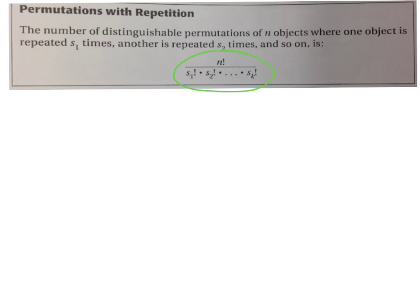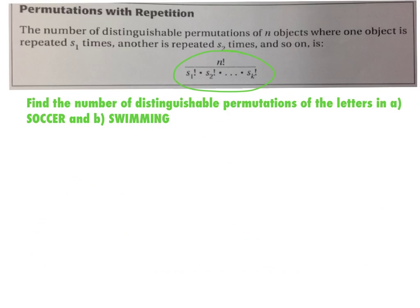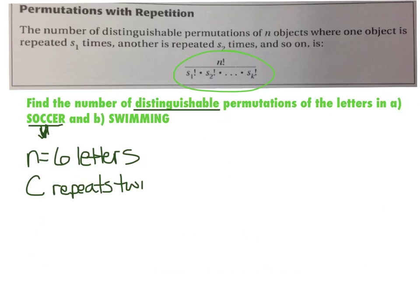All right. So let's do an example problem. Find the number of distinguishable permutations. Distinguishable means different ones that you can tell the difference between, of the letters in soccer and then in swimming. So it's saying how many times, like if I rearrange the letters, for example earlier we did ABC, ACB, and so on. There's a C that repeats here. So does it really matter if I switch these two Cs? It would not be distinguishable as a different permutation.